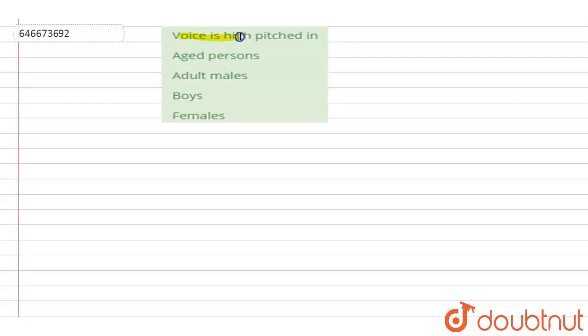Question is: voice is high-pitched in? Options are aged person, adult males, boys, female. If we'll see the voice pitching, the pitch of the voice depends upon the vocal cords or larynx, which is the voice box. It controls the voice, it controls the pitch of the voice.